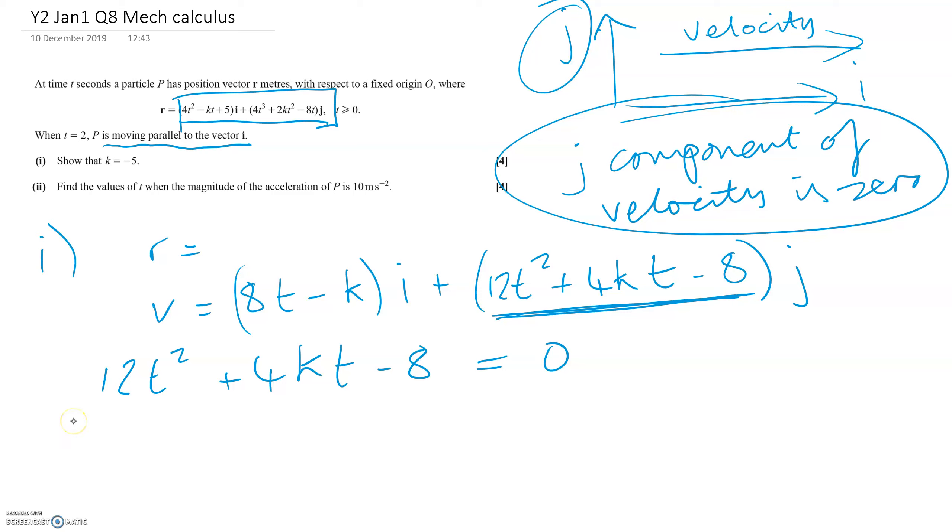The question says this happens when T equals 2. So when T equals 2, we've got 12 times 2² plus 4K times 2 minus 8. Simplifying gives us 48 plus 8K minus 8 equals zero. In other words, 8K equals minus 40, so K equals minus 5.